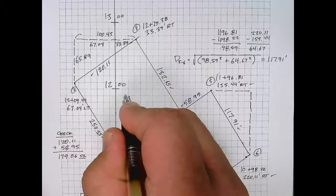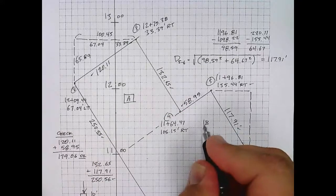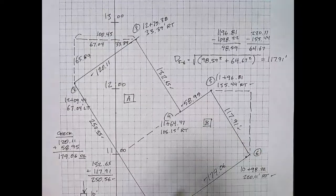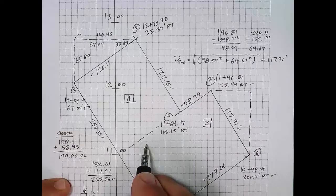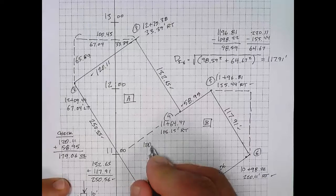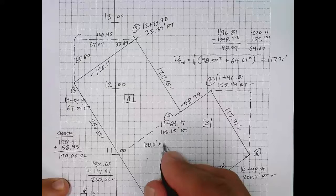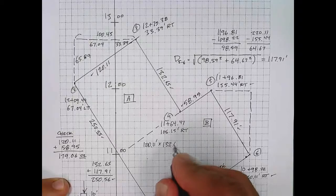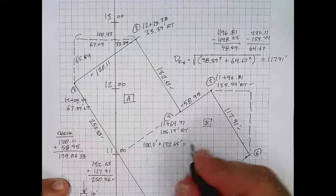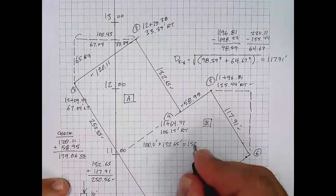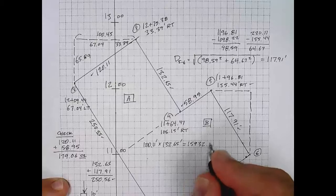Now that I have the dimensions, I am ready to calculate the area of this building. I like to do it by dividing it into things I already know how to calculate. So area A is above the dashed line and area B is below the dashed line. Area A has dimensions 120.11 feet by 132.65 feet, and thus the product of those is the area of area A: 15,932.6 square feet.